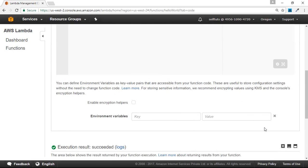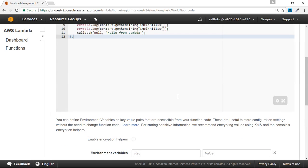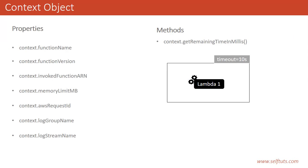This was all about the context object of AWS Lambda. We have seen these properties and methods. If you like my channel, please subscribe, and if you like this video, please give a thumbs up. Thank you. Happy coding.